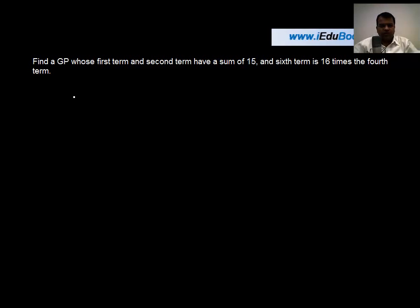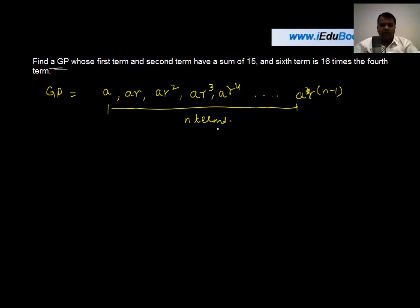Now we all know that a geometric progression, or a GP, is something like a, ar, ar², ar³, ar⁴, and so on until we reach ar^(n-1), assuming the GP has n terms.